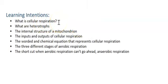We're going to look at what is cellular respiration, what are heterotrophs, what a mitochondrion is, and the inputs and outputs of cellular respiration and the overall worded and chemical equation that represents cellular respiration. In future lessons, we'll probably look at the three different stages of aerobic respiration and then the shortcut that we take when we don't have enough oxygen and aerobic respiration can't go ahead, which is anaerobic respiration. That's the one that makes your legs burn when you're running fast.